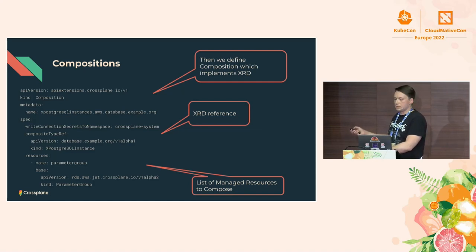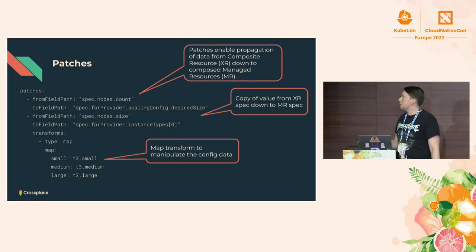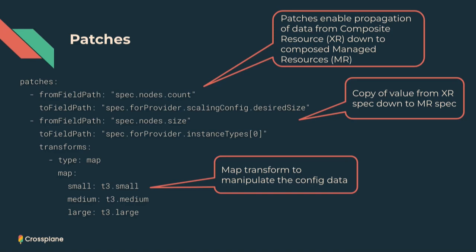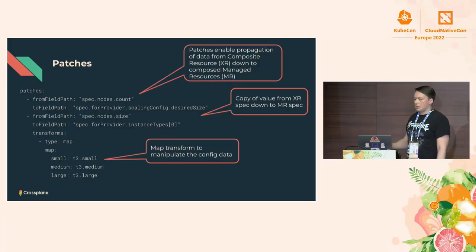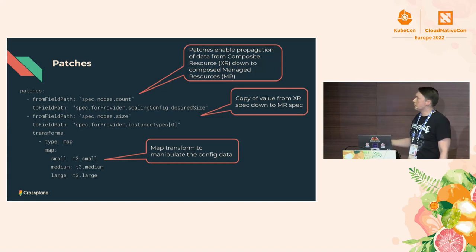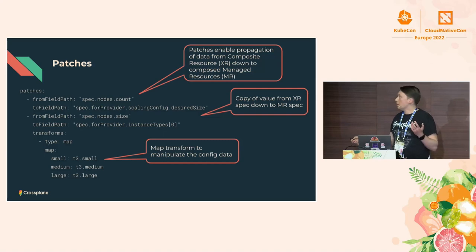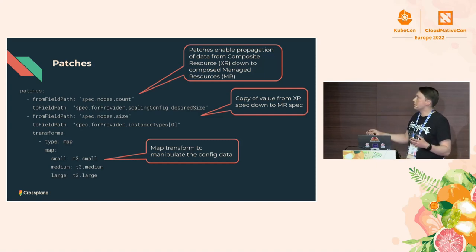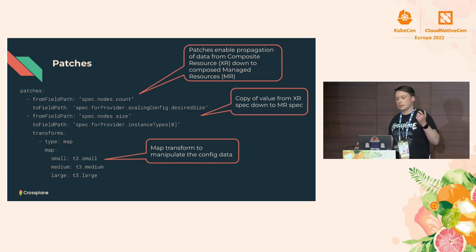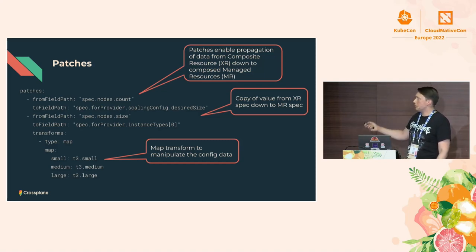This is a list of static resources, so how do we make it more dynamic? We have a concept of patches. We can propagate data from the composite resource — which we define and instantiate out of a composite resource definition and associated claim — down to the managed resources composed by the composition. You can expose only required API fields and name them as you like. Additionally, we provide runtime transforms as a form of patch. For example, you can abstract the instance types in a cloud provider and expose to your teams only internal naming like small, medium, large, and the actual meaning can be defined by platform builders.